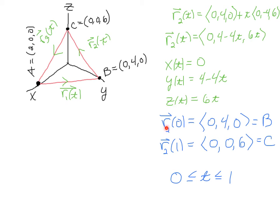And then you notice that if I plug in t = 0, I get the point B, because when t = 0, I have ⟨0, 4, 0⟩. And when I plug in 1, I get 0, and then 4 - 4 is 0, and then 6 times 1 is 6, so that gets me to the point C. So R(0) is B, R(1) is C, and we would then say that t is between 0 and 1.